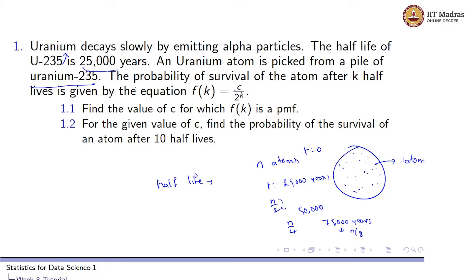So what they are asking is: the probability of survival of the atom after k half-lives is given by the equation f(k) = c / 2^k. Let's look at this expression. Initially we have n atoms, and after one half-life it would be n/2. That means only half of the atoms remained. So the probability for an atom to be surviving after one half-life would be 1/2, since only half of the atoms were left over.